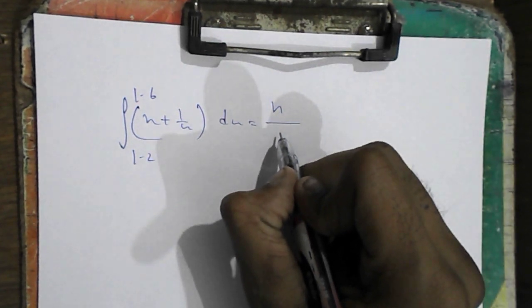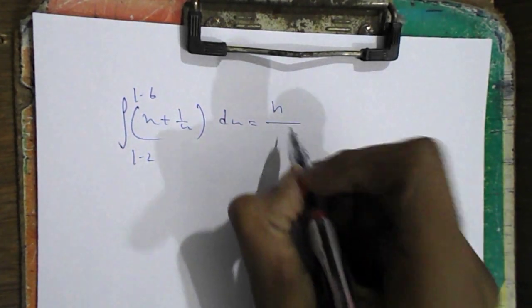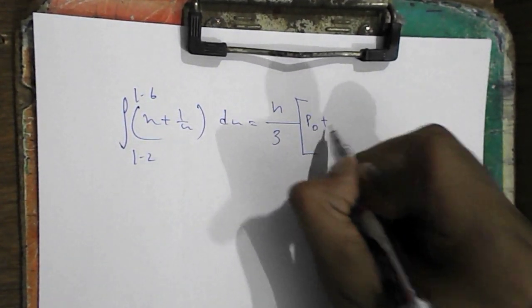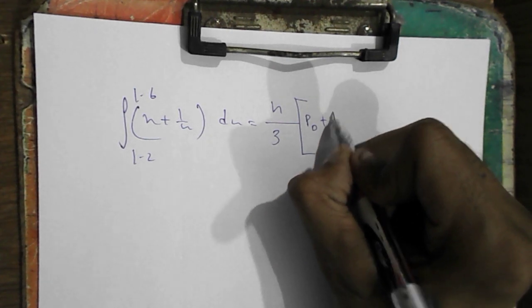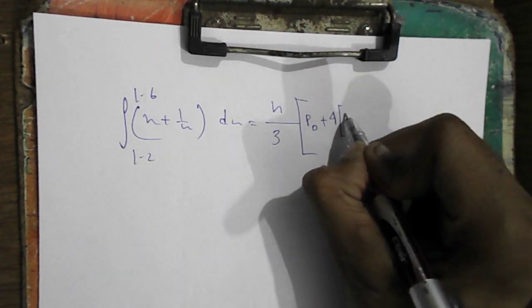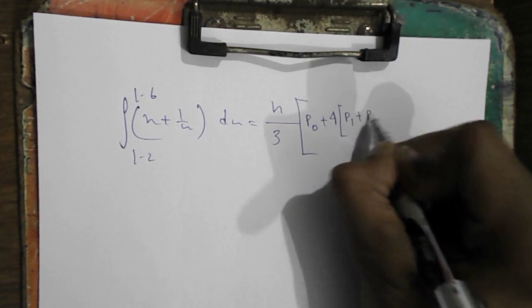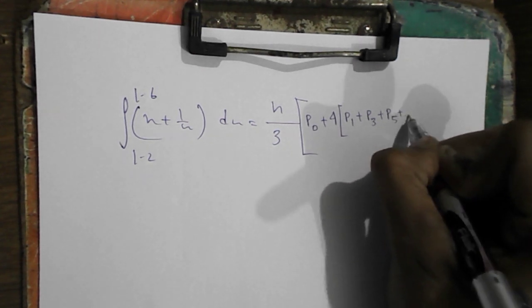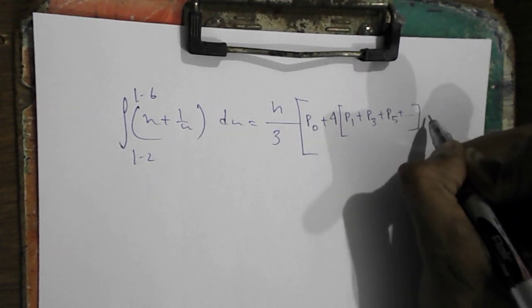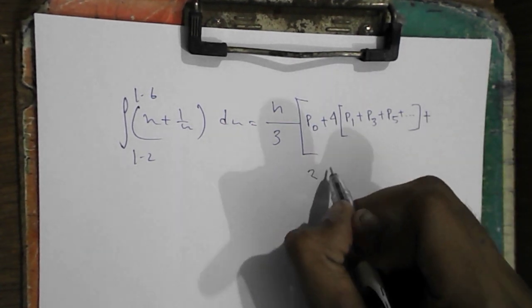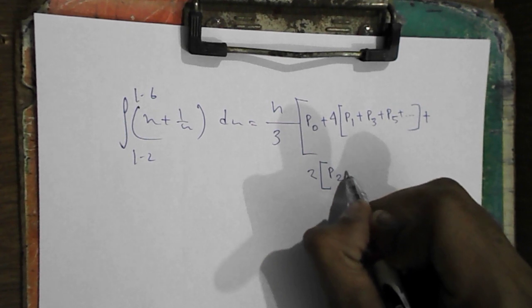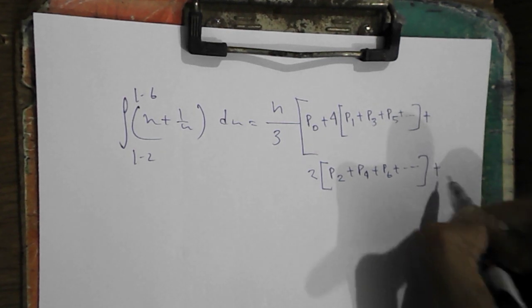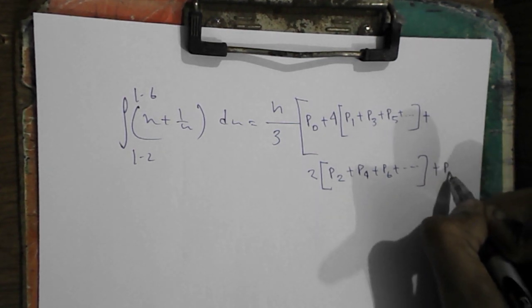p0 plus 4 times p1 plus p3 plus p5 plus dot dot dot, plus 2 into p2 plus p4 plus p6 plus dot dot dot plus pn, the last term.